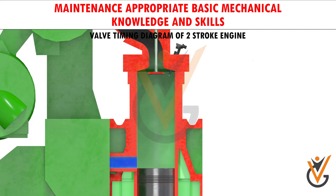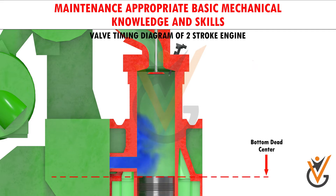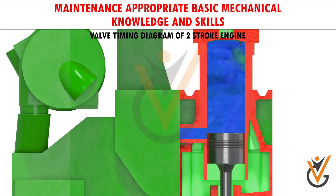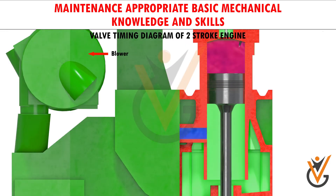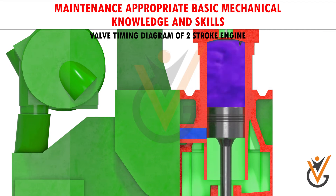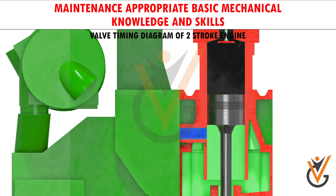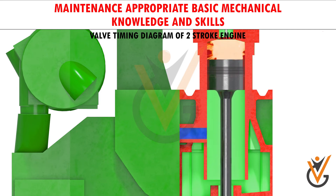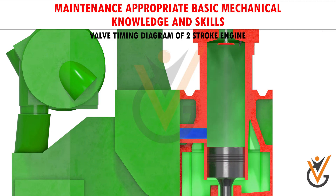The exhaust valves open before the piston reaches bottom dead center. The piston uncovers the scavenge ports as it moves down. When the pressure within the cylinder drops below the pressure in the scavenge manifold, a fresh charge of air enters the cylinder. An external blower supplies air under pressure for scavenging, as the air pressure is greater than the pressure inside the cylinder. This fresh air pushes out the exhaust gases through the open exhaust valve.